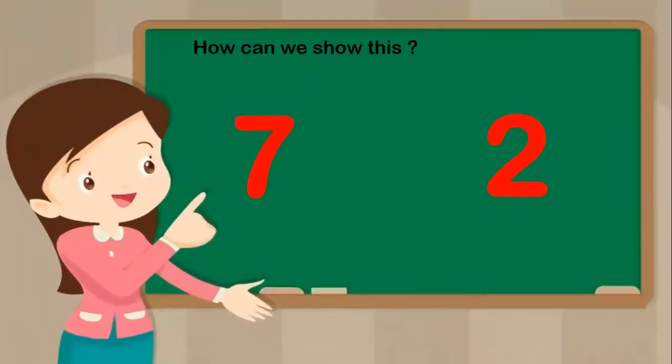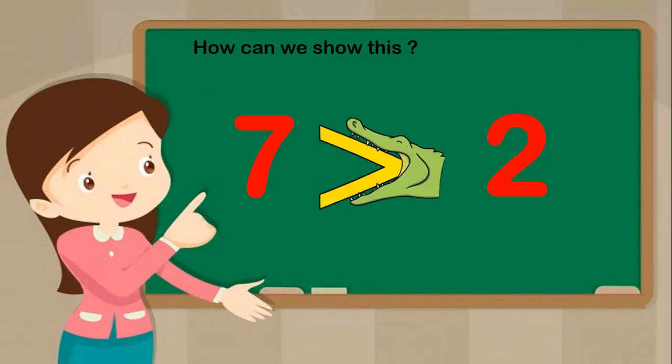Now let us look at the board and see how we compare numbers using Ellie's mouth. Here we have two numbers: number seven and number two. Which one is greater? Number seven! So we will open Ellie's mouth towards number seven, because seven is the bigger number.